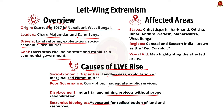The movement spread to several states, primarily in Central and Eastern India, including Chhattisgarh, Jharkhand, Odisha, Bihar, Andhra Pradesh, Maharashtra, and West Bengal. The most affected regions are often referred to as the Red Corridor. Look at this map to note the affected areas.